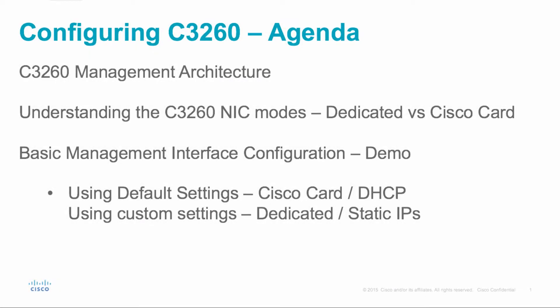We're going to talk about three things in this video. The first thing is going to be the C3260 management architecture — a basic high-level overview of how the management architecture is connected. The second thing will be understanding the two different NIC modes for the 3260: dedicated mode versus Cisco card mode. And lastly, we'll go through some basic management interface configurations, done via demo.